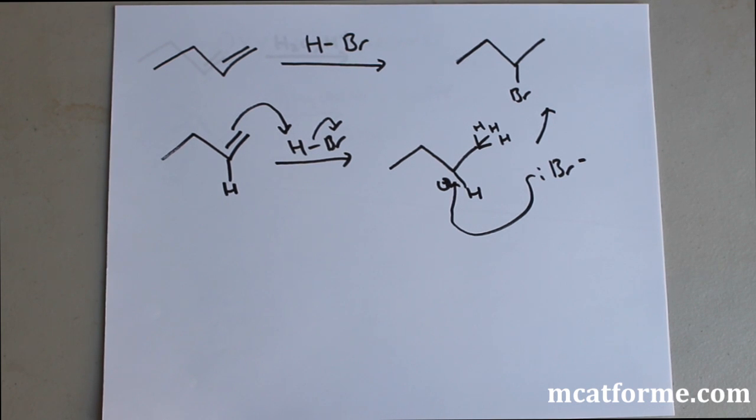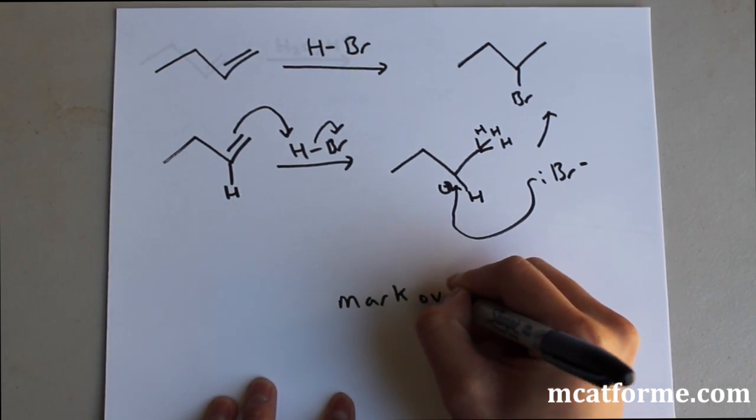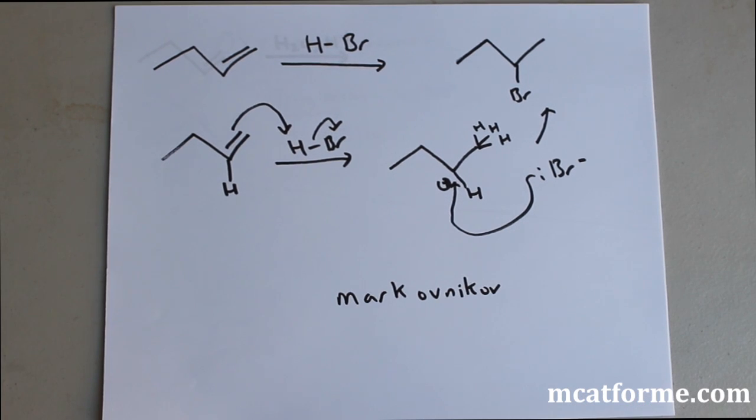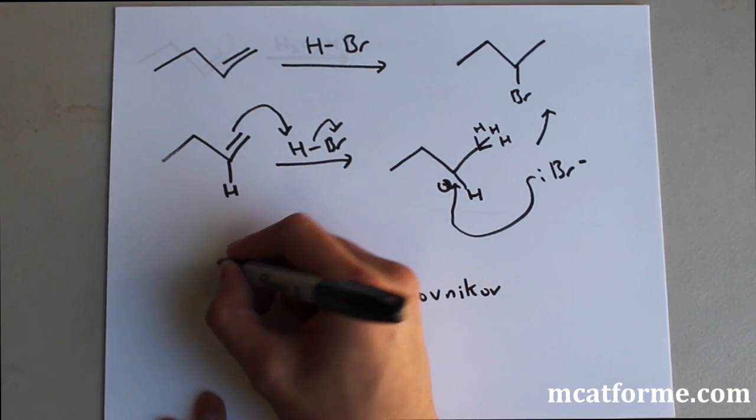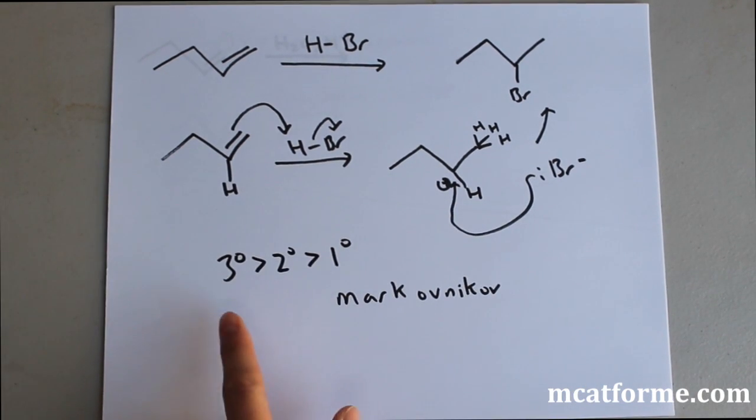Alright so the thing to remember is that it's Markovnikov so that's spelled like this, Markovnikov. So what Markovnikov addition is is that it specifically chooses the most stable carbocation. So in this case it's secondary because secondary is greater than primary but if there's a tertiary we would see a shift and we'll see that tertiary is greater than secondary is greater than primary.